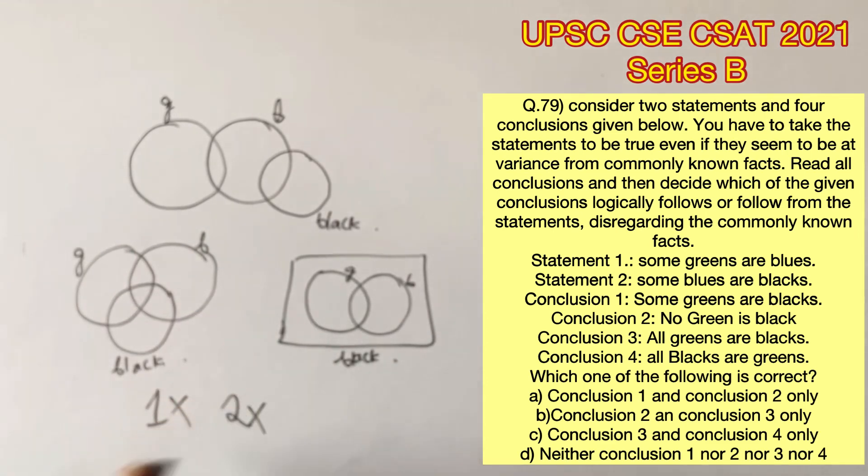Conclusion 3 says all greens are blacks. This is true only in the third case. Therefore, conclusion 3 is also wrong.